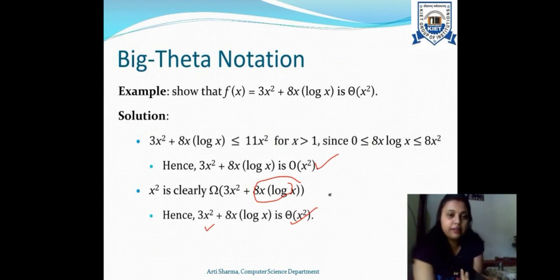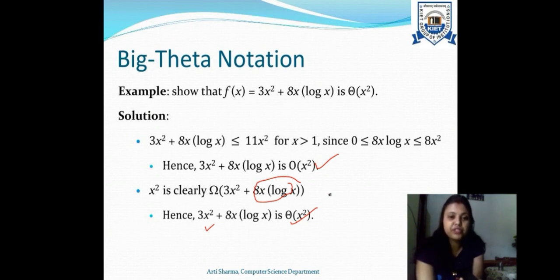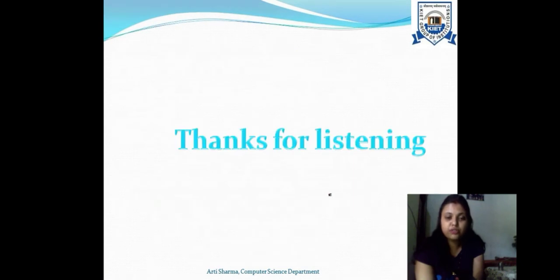To conclude: in today's lecture we discussed recursively defined functions, the phenomenon of recursion with examples of factorial, Fibonacci series, and the Ackermann function. We then studied the growth of functions, used to compare the efficiency of algorithms, along with asymptotic notations Big O, Big Omega, and Big Theta. Thank you so much for listening.